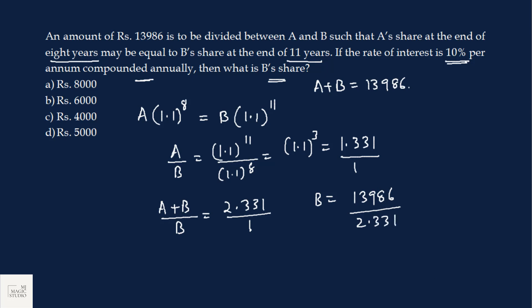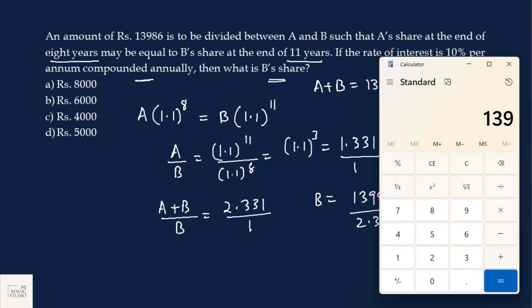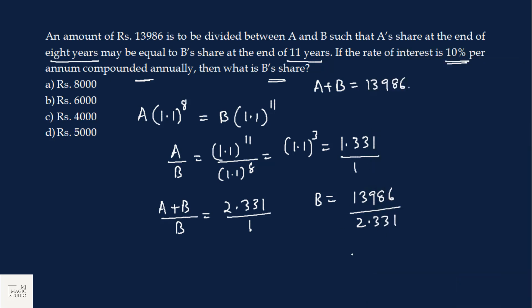What is the value of B? B is A plus B, that is 13986 divided by 2.331. And now I have my friend with me. 13986 divided by 2.331 gives me 6000. So B's share is 6000. What is B's share? 6000, that is in option B.